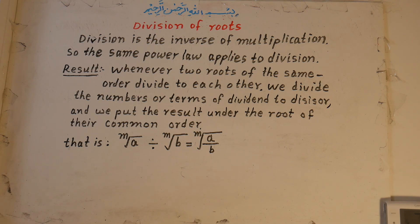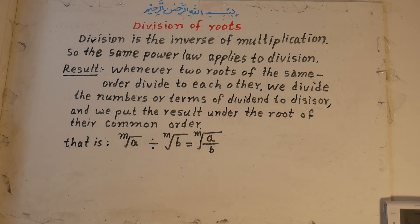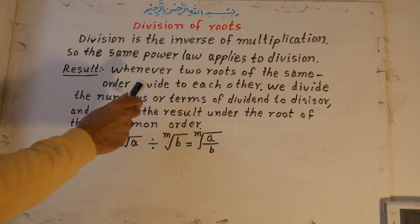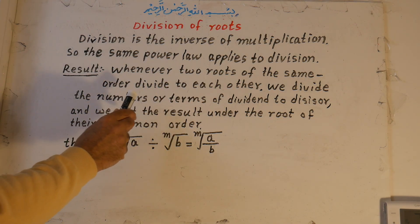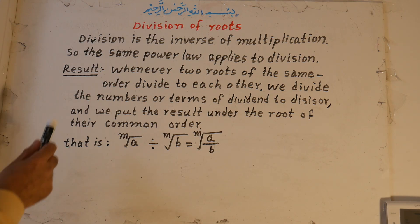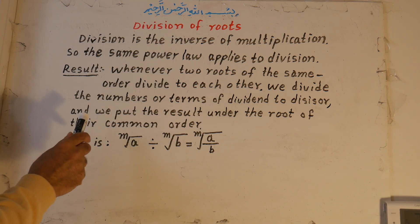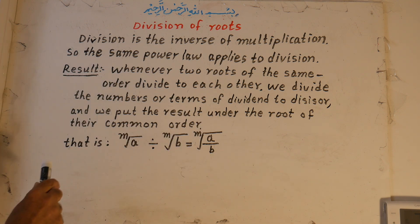Division is the inverse of multiplication, so the same power law applies to division. The power of the roots for dividend and divisor both should be the same. Otherwise, we cannot divide these two roots. Whenever two roots of the same order divide to each other, we divide the numbers or terms of dividend by divisor and put the result under the root of their common order.